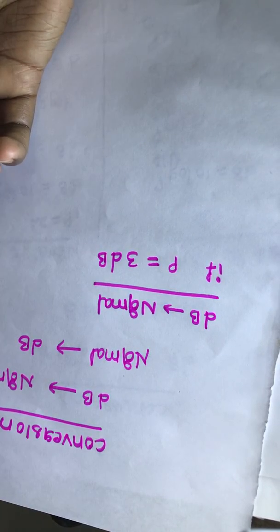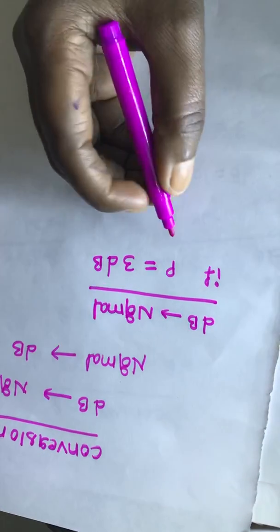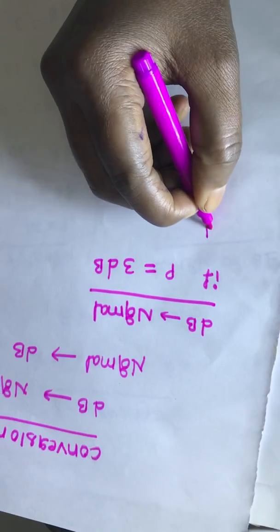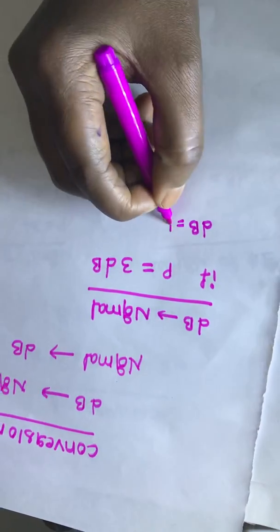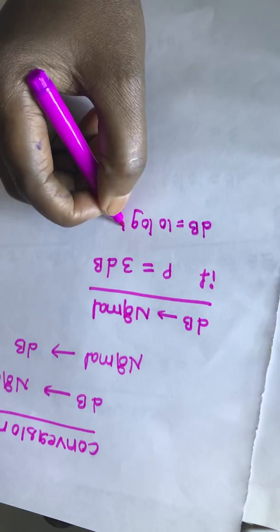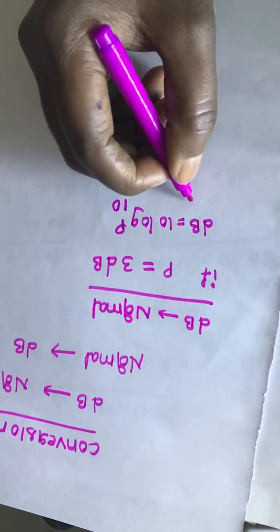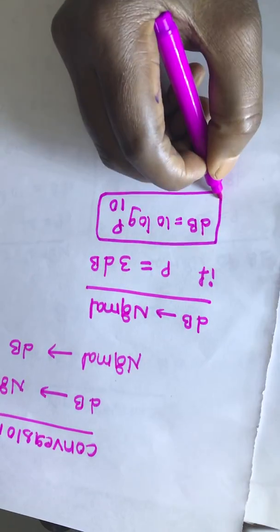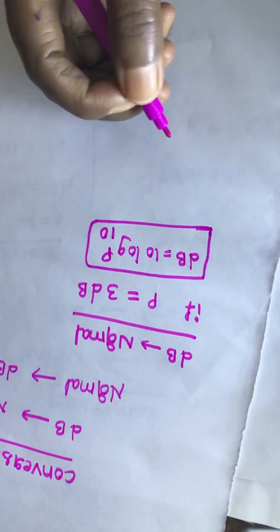To convert from dB scale to normal scale we have a formula that is dB is equal to 10 log P base 10. This is the important formula to convert normal scale to dB scale.